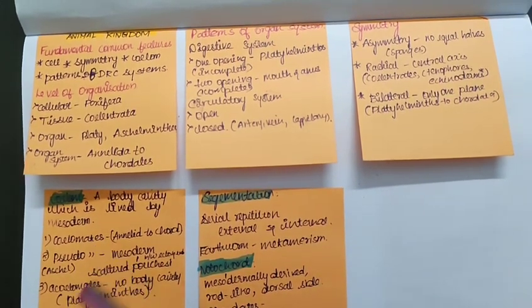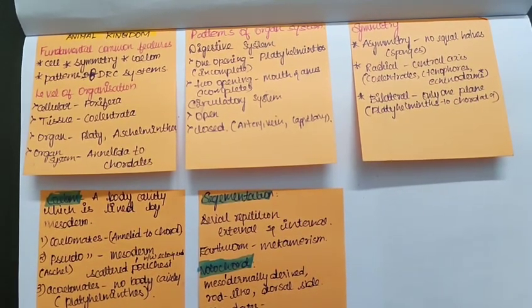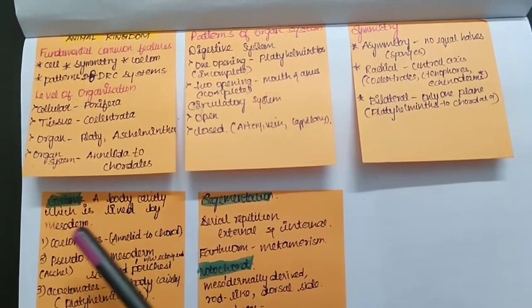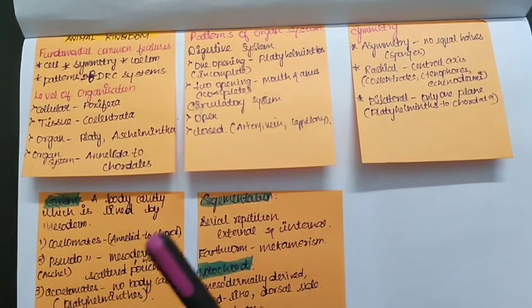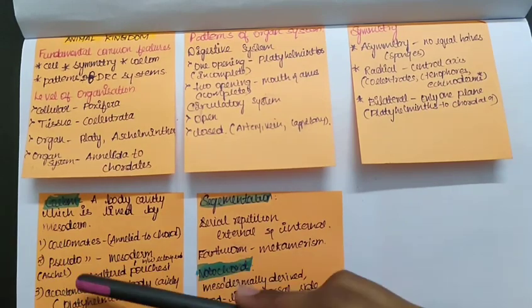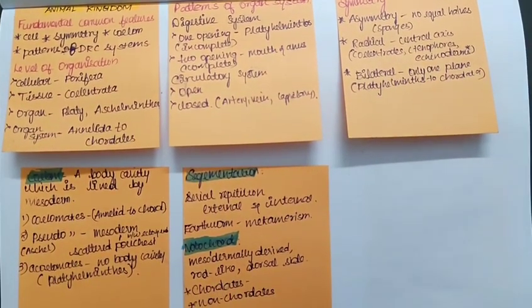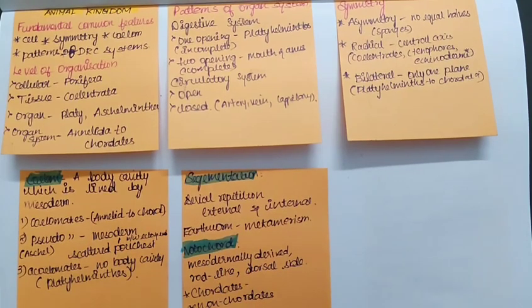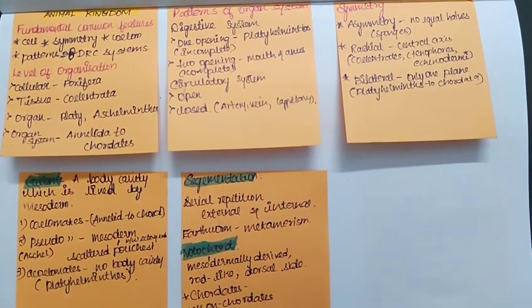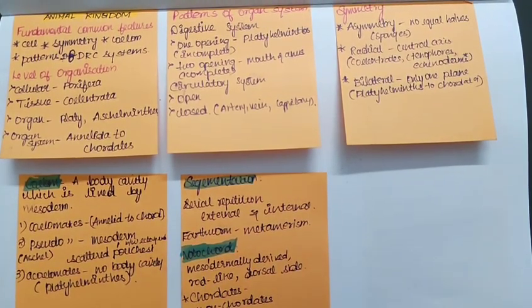What is coelomate? Animals which is having the true coelom, which is having a body cavity which is lined by the mesoderm, that is seen from Annelids to Chordates. Talking about pseudo, pseudo means false. So pseudocoelom is where the mesoderm is not present properly and it will be seen as scattered pouches. It is not arranged properly, it will be scattered over between the regions of ectoderm and endoderm.